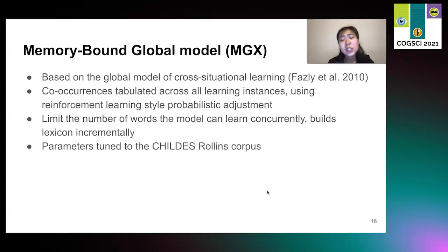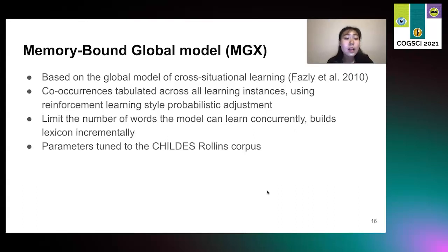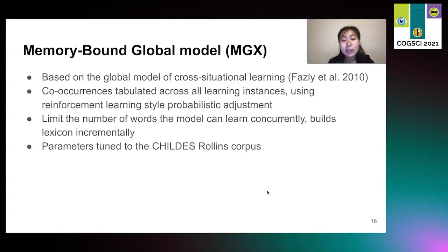We also incorporate memory into a global model based on the global model of cross-situational learning presented by Fazly et al. The co-occurrences are tabulated across all learning instances using a reinforcement-style learning probabilistic adjustment. The memory buffer limits the number of words that the model can learn concurrently, but note that it doesn't constrain the other dimension — that is, the number of meanings that the word is associated with. Additionally, like MBP, we build the lexicon incrementally, checking after each learning instance to see if the association score exceeds the threshold value, which has been tuned to the child-directed Roland's corpus.